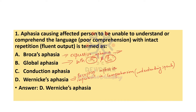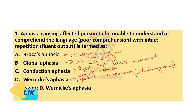Conduction aphasia is a rare form of aphasia in which both expression and comprehension are intact, but there is an isolated impairment in the ability to repeat simple phrases. So in our question, the aphasia in which the person is unable to understand or comprehend — with intact repetition — is Wernicke's aphasia.